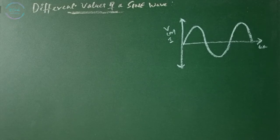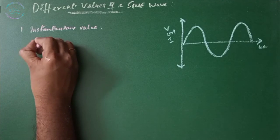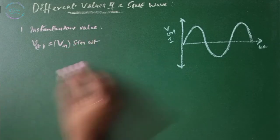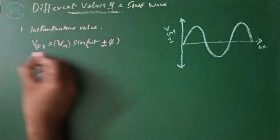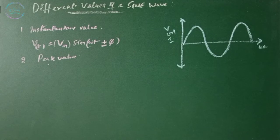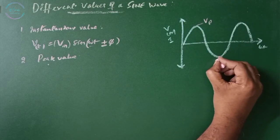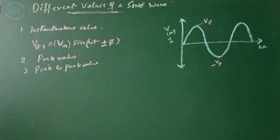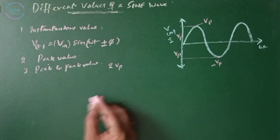As the magnitude of the waveform is not constant, it can be measured in different ways. First, instantaneous value is found using the formula V(t) equals the maximum value times sine(omega t ± phi). Second, peak value is the maximum value of the wave during the positive half cycle (Vpeak). Third, peak-to-peak value is the value from positive to negative peak, which equals 2Vp.